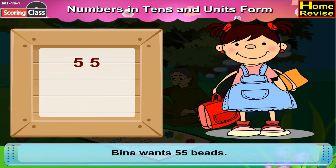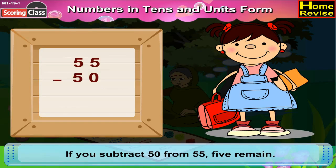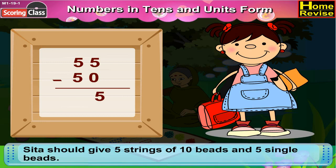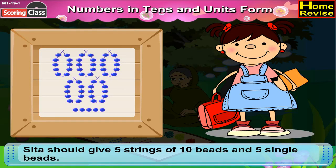Bina wants 55 beads. As you know, 5 tenths means 50. If we subtract 50 from 55, 5 remains. Which means, Sita should give 5 strings of 10 beads and 5 single beads.